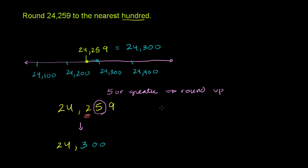And just as a counter example, if I had 24,249, and I wanted to round to the nearest hundred, I would say, OK, I want to round to the nearest hundred. Let me look at the tens place.